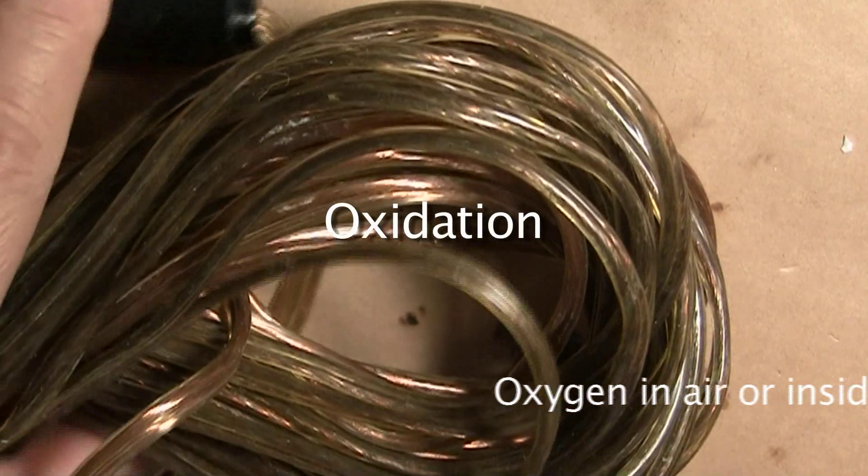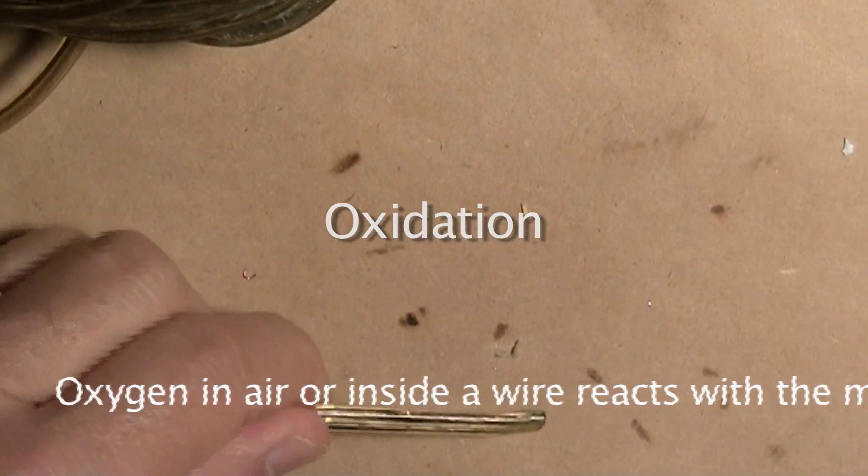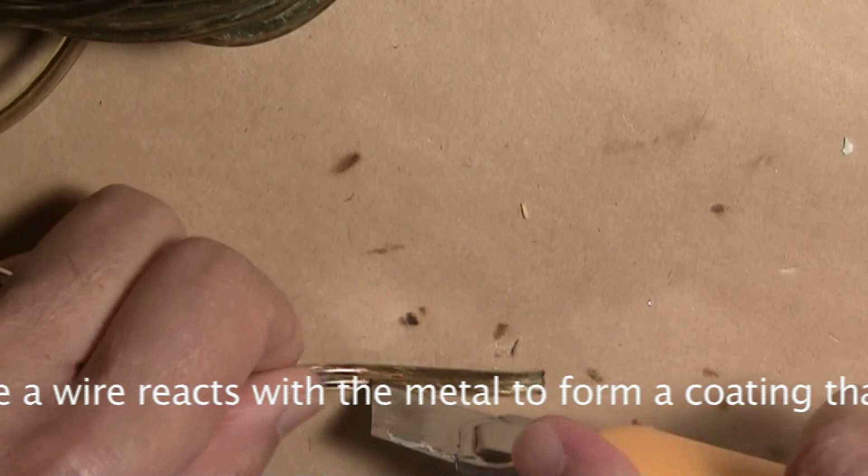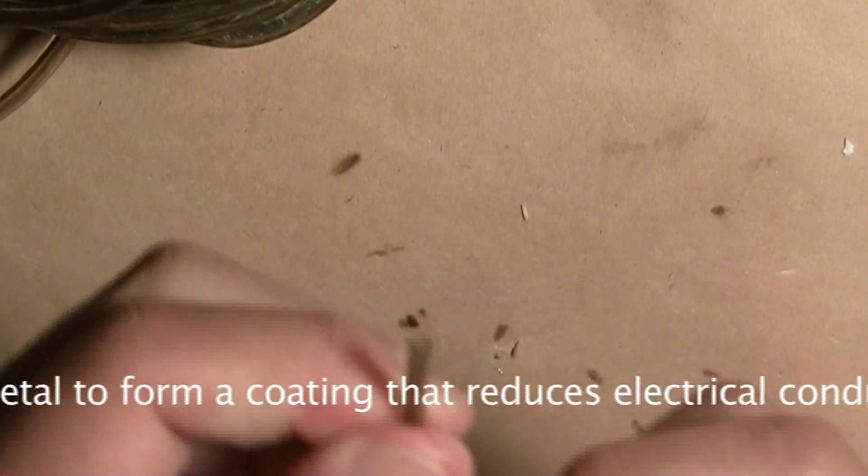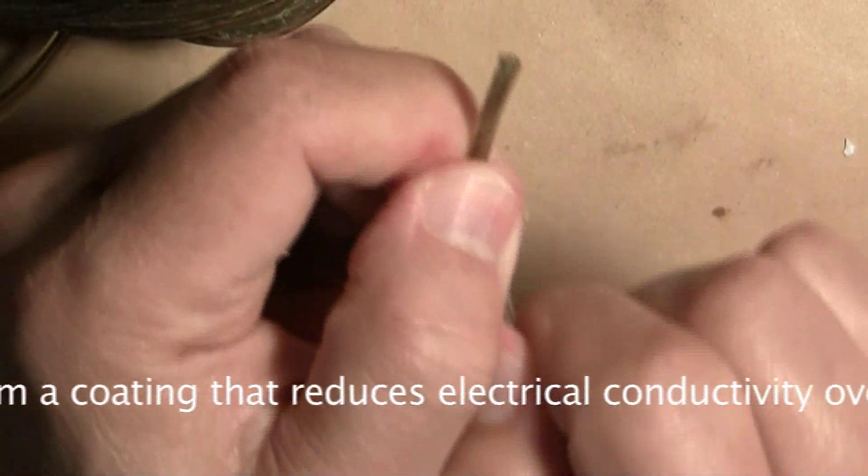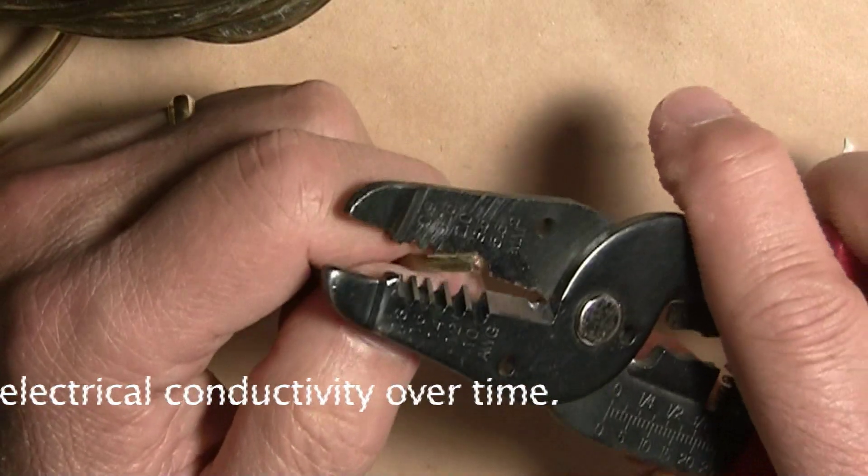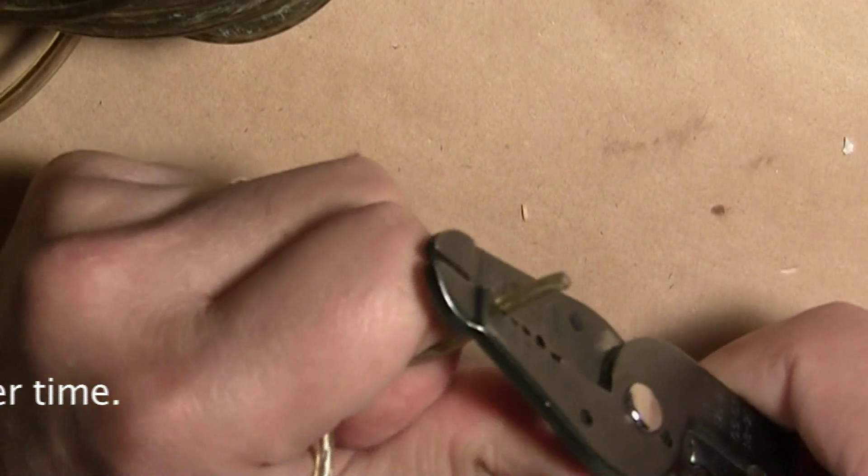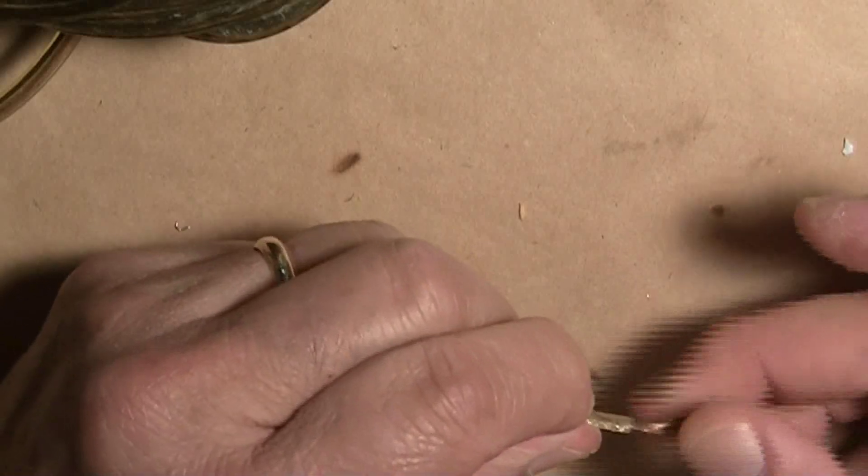Here is a wad of old speaker cable. Let's see what the oxidation on this wire looks like. It is probably 16 gauge. You can see there is some light oxidation discoloration on these copper wires.